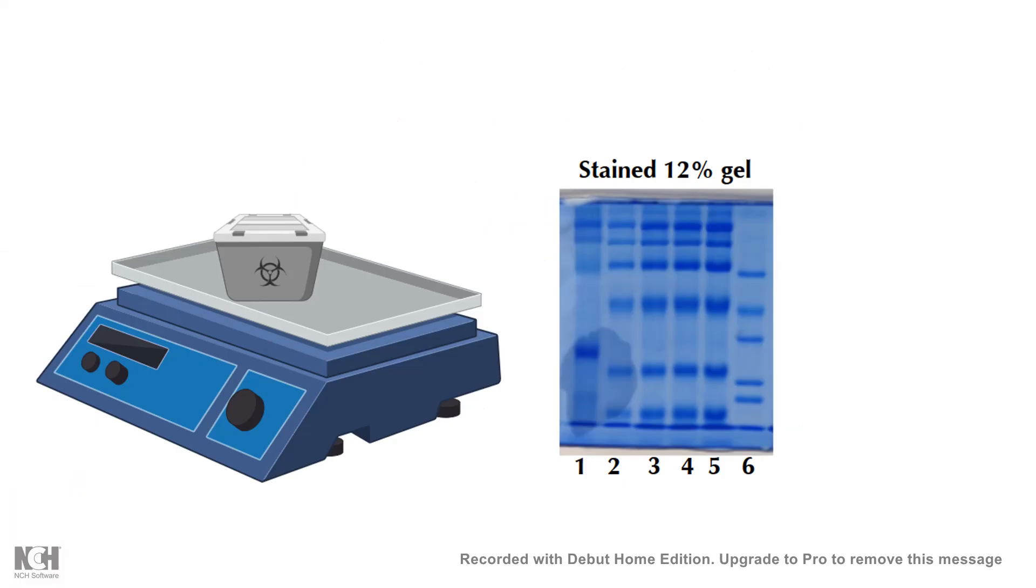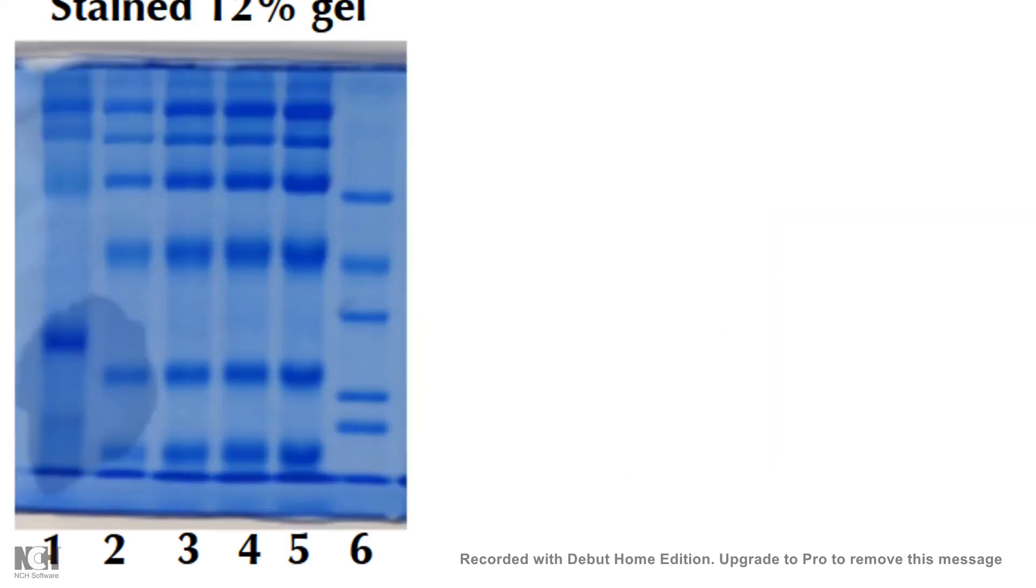In the last protocol with SDS-PAGE electrophoresis, we stained the gel and we know our protein of interest is, let's say, 75 kilodaltons, and we expect our protein of interest to be present in that band. But imagine there could be other proteins which have very similar molecular weights.